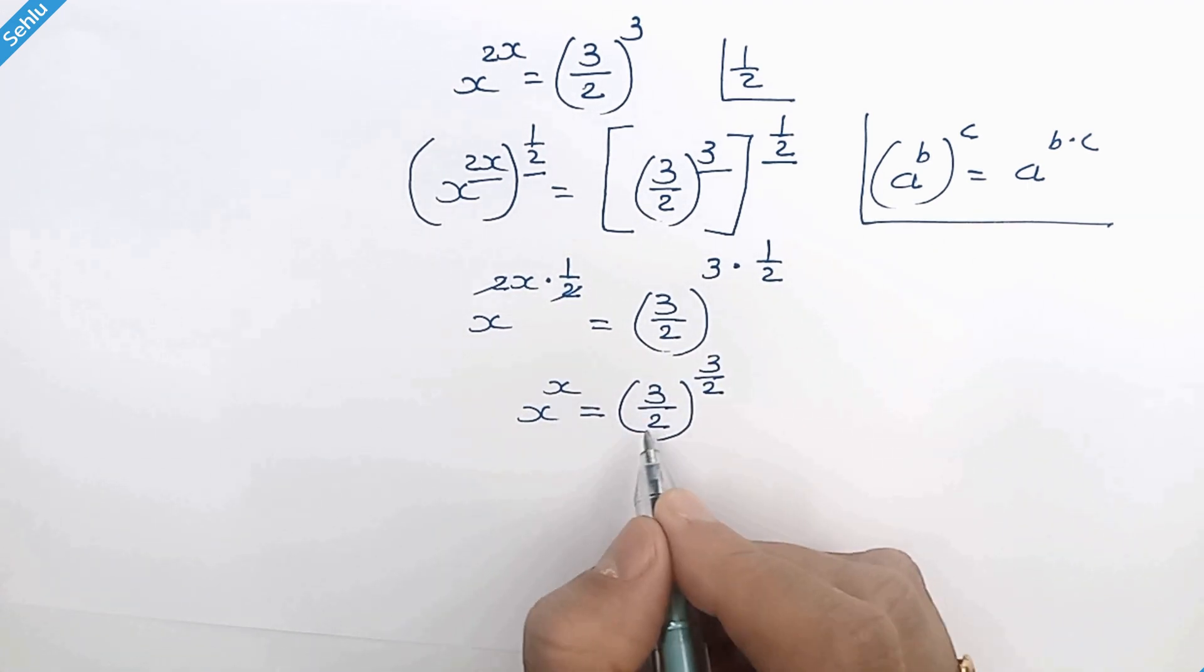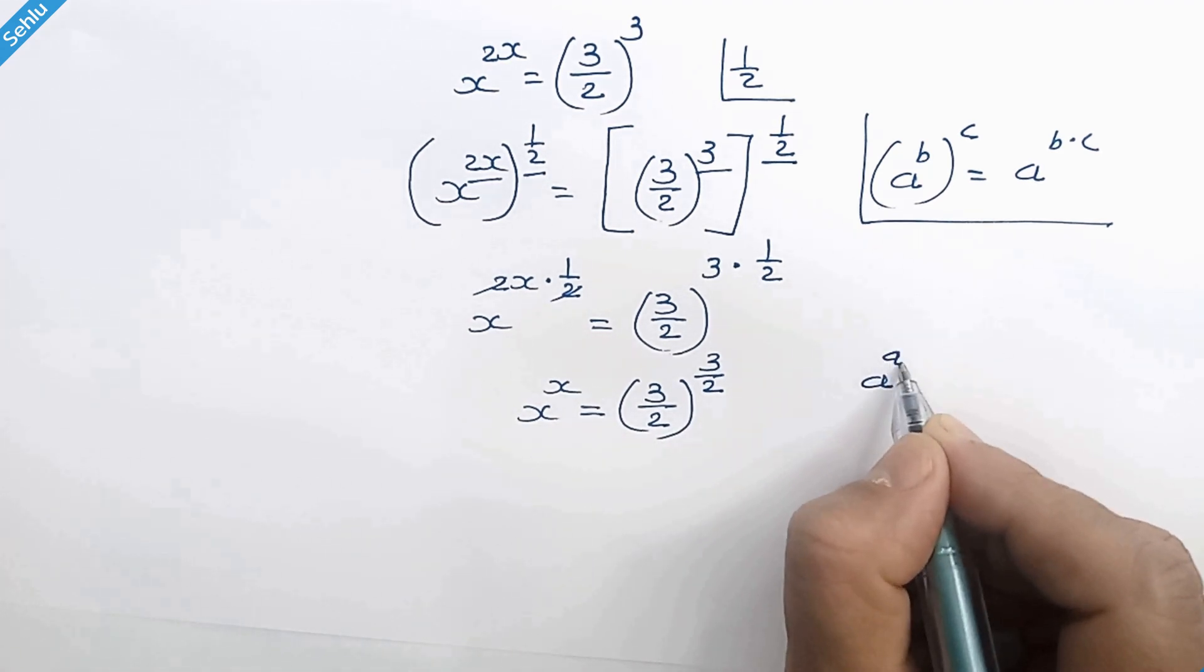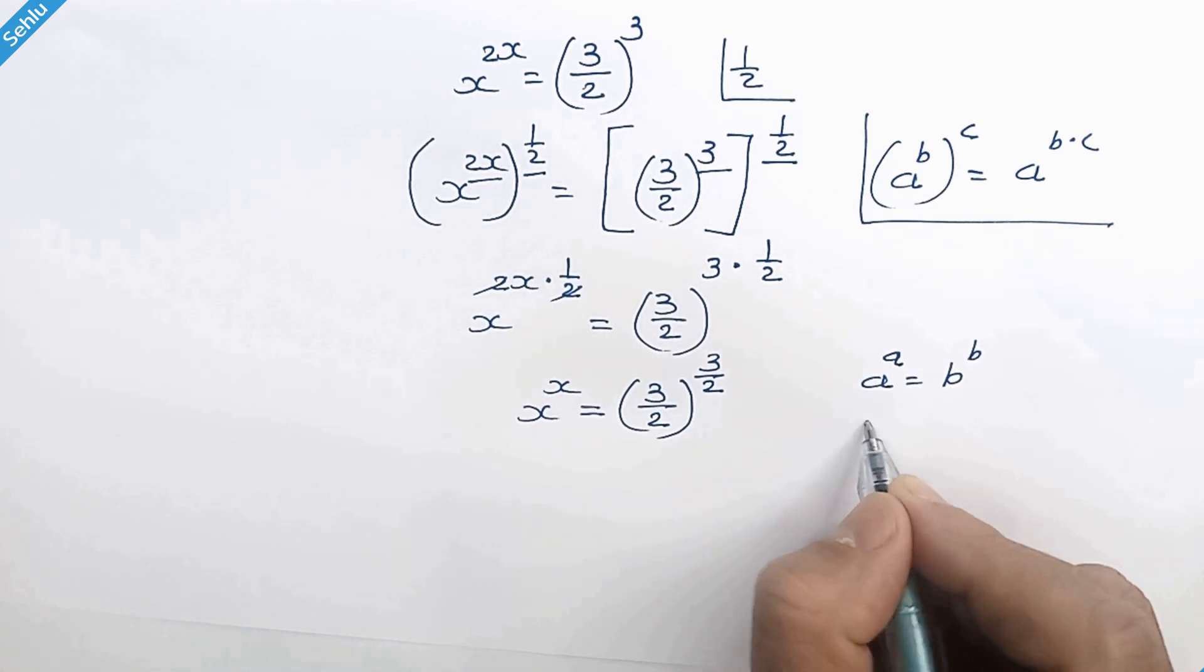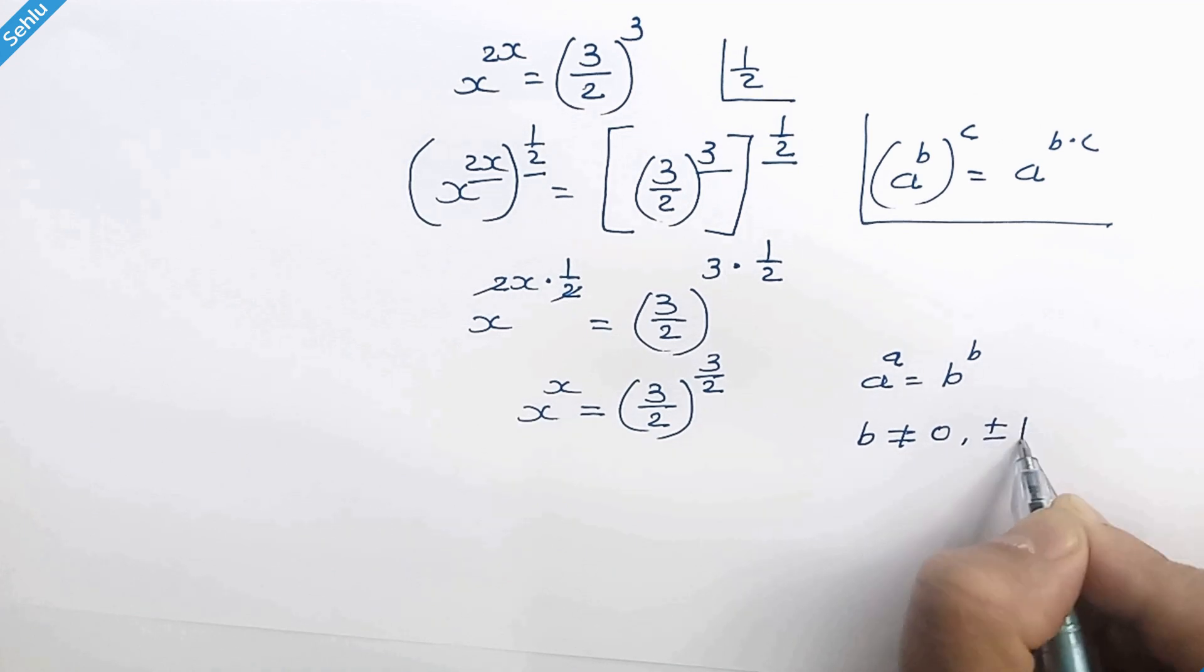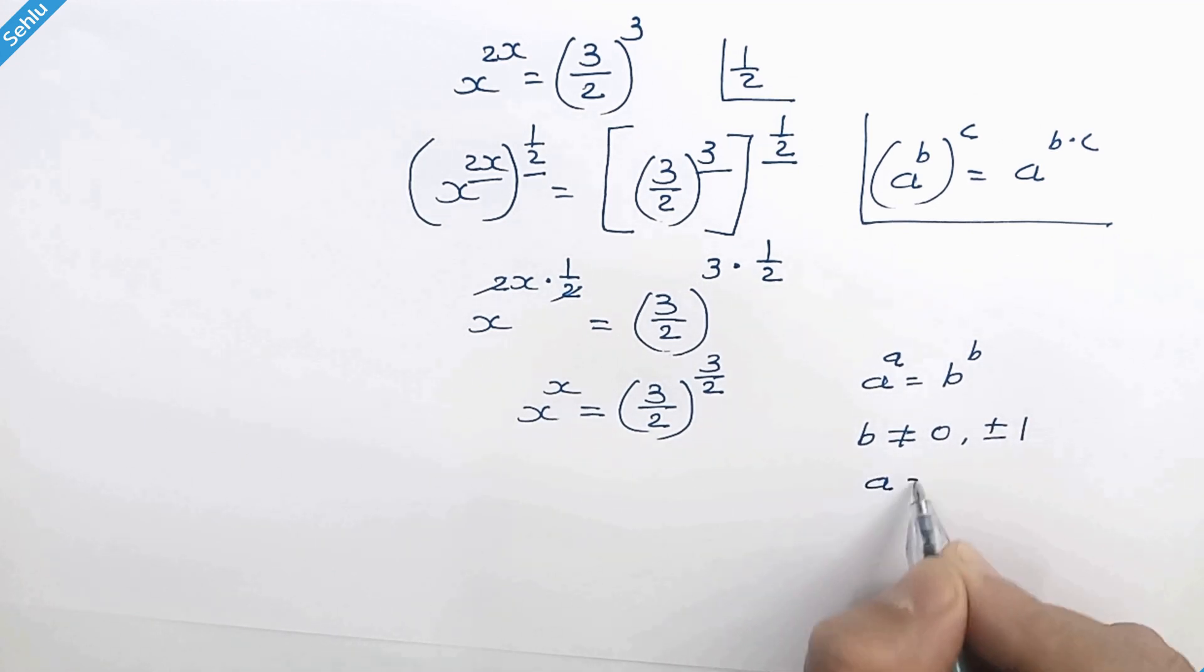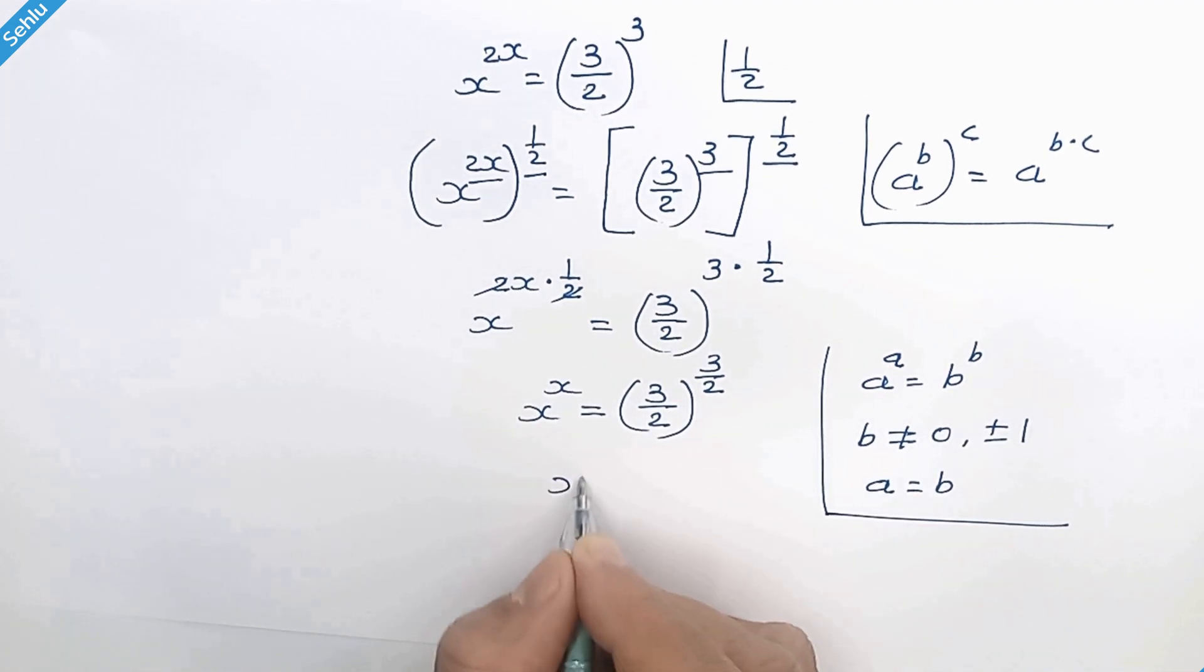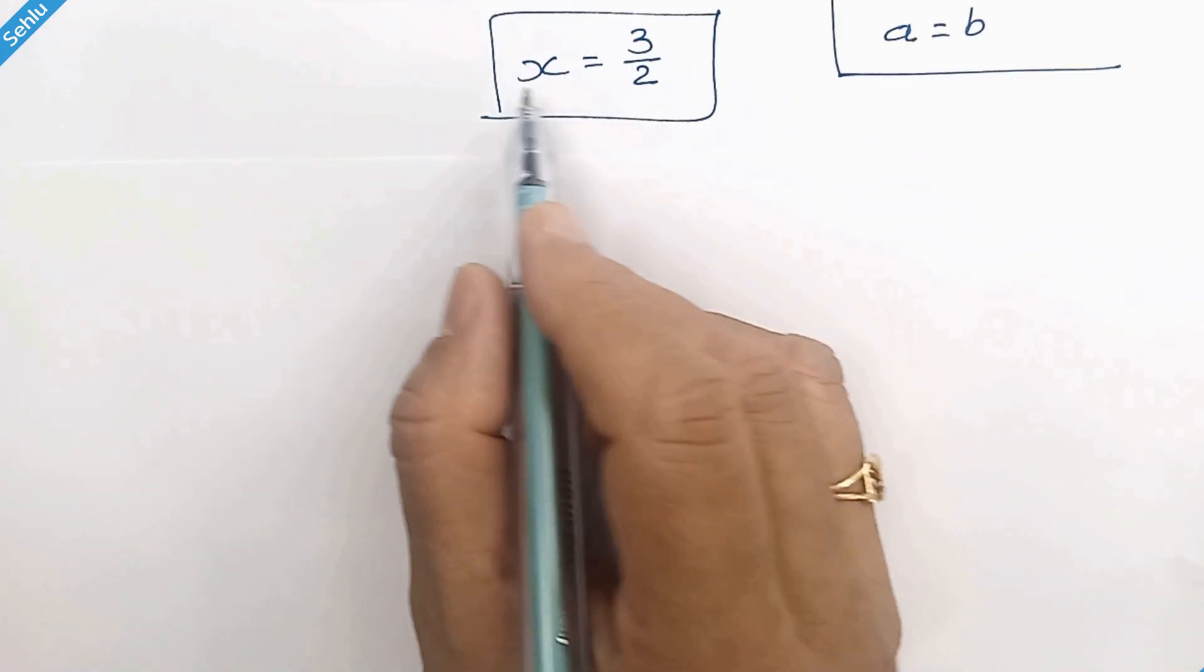Base and exponent are same both the sides. So when we have a to the power a is equal to b to the power b where b is not equal to 0 or plus or minus 1 then we can equate a is equal to b. In this manner here we can equate x is equal to 3 over 2 and that's the answer.